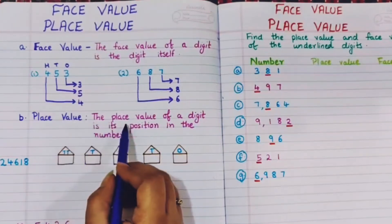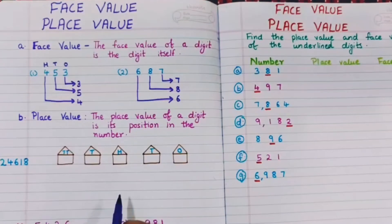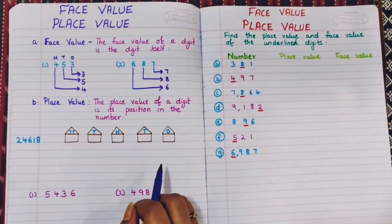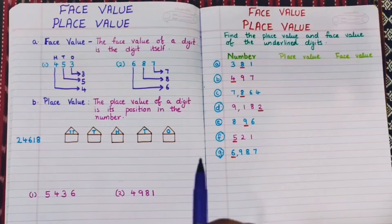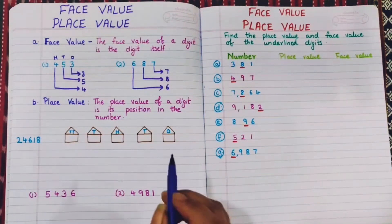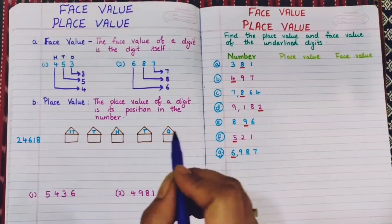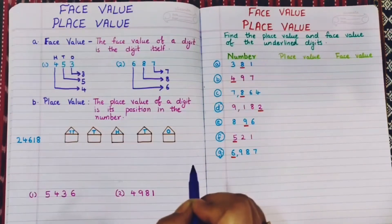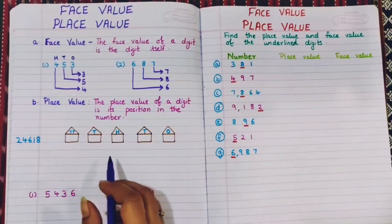Place value means the house in which the number is sitting. Let's take an analogy: if you are staying in a colony, the delivery boy comes to your particular house. The position of your house in the colony is your place value — the position where you are staying.